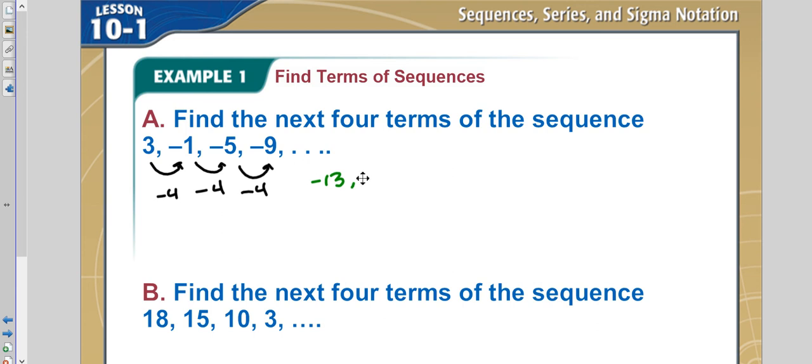Followed by, if we subtracted four more, negative 17, then negative 21, followed by negative 25. These would be the values for the sequence, the next four terms of that sequence.